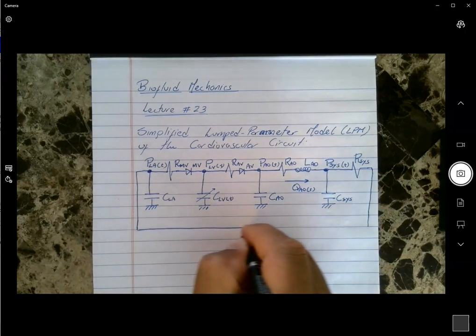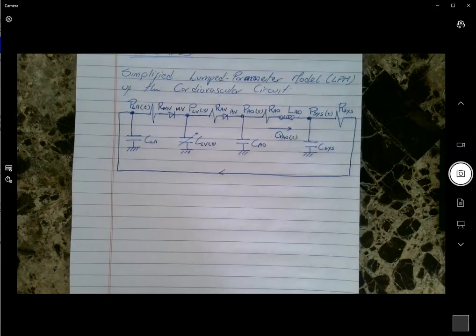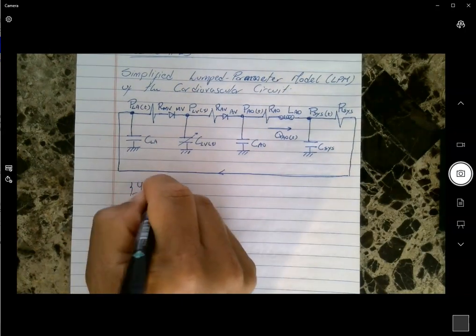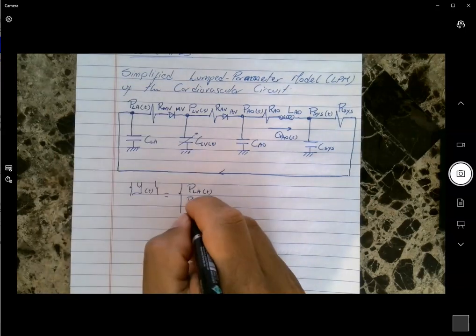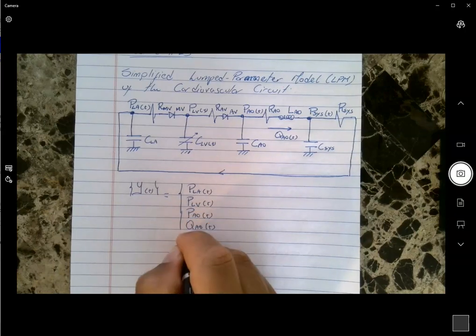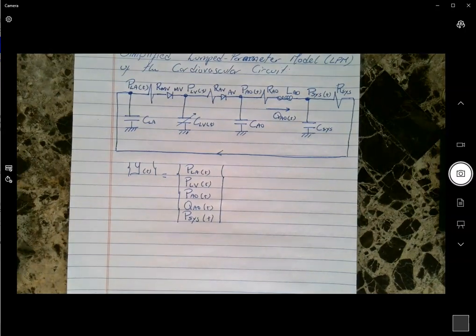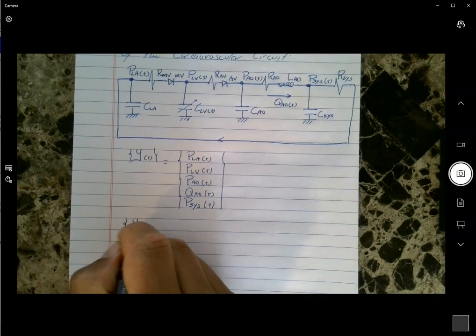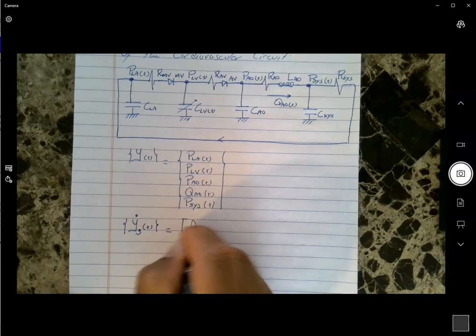The circuit continues with the resistance and inductance of the aorta, aortic flow as a state variable, and finally the systemic pressure node with its systemic compliance and resistance that closes the loop. The state variables are ordered as: pressure of the left atrium, pressure of the left ventricle, pressure of the aorta, flow in the aorta, and systemic pressure. This ordering leads to a switched system of equations.